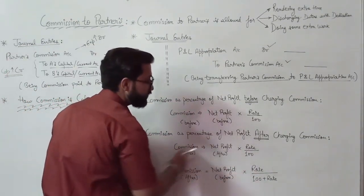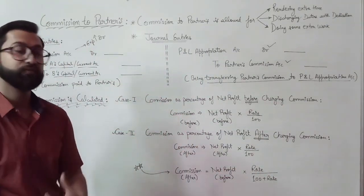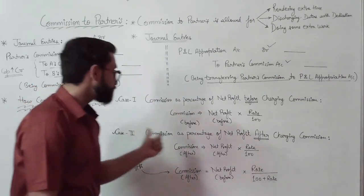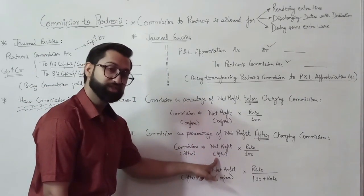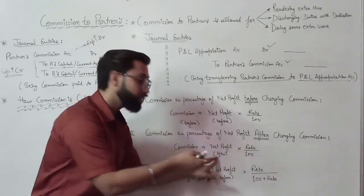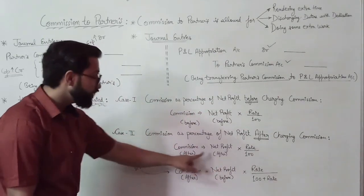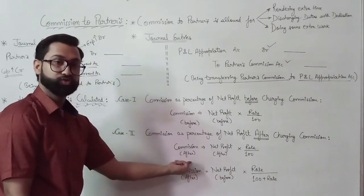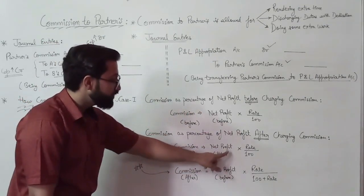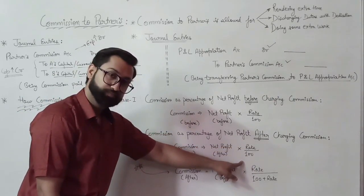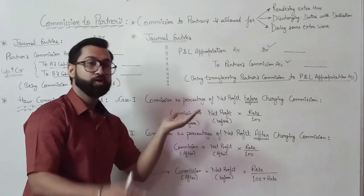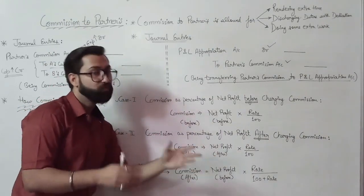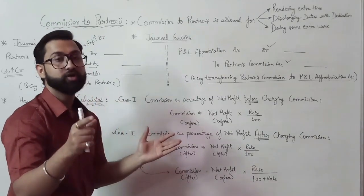Case two: commission as a percentage of net profit after charging such commission. In this case, you calculate commission from that profit from which commission has already been deducted. The commission you are calculating is already deducted from this profit. Since both items are 'after', the formula remains the same: Commission = Net Profit (after charging commission) × Rate / 100.